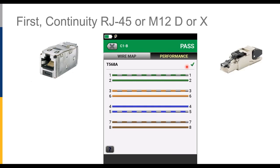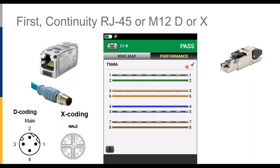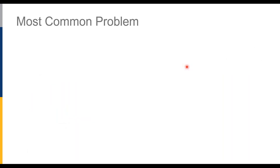We'll also see continuity with M12 connectors — round connectors more common in industrial environments because they're heavy-duty and won't shake loose, addressing the Mechanical, Ingress, and Climatic elements of MICE. You can screw them down so they won't come loose or be as susceptible to dirt or water. There are two flavors: the D-code, which has two pairs to run 10 and 100 megabit Ethernet, used for years; and the X-code — Roman numeral 10 — a four-pair version allowing use of Category 6A cable to run 10 gigabit communication.